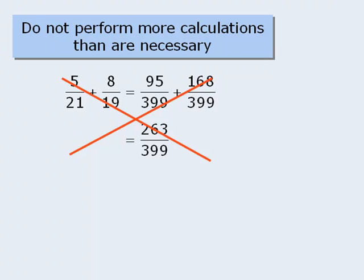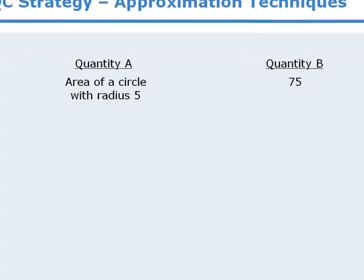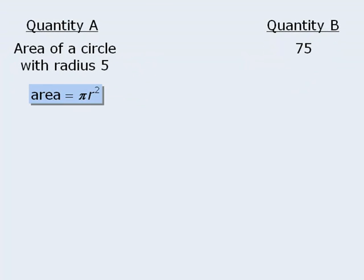Now the first technique we'll examine uses some simple estimation with a twist. Consider this question. To solve it, we'll apply the formula for finding the area of a circle. Since the radius of the circle is 5, the area will equal pi times 5 squared, which evaluates to be pi times 25.